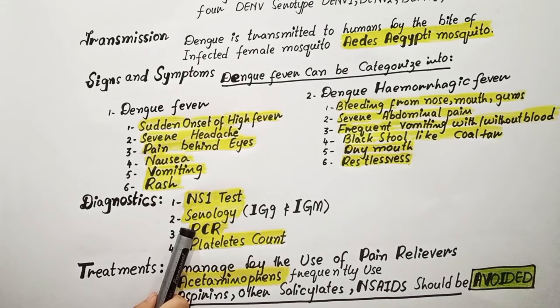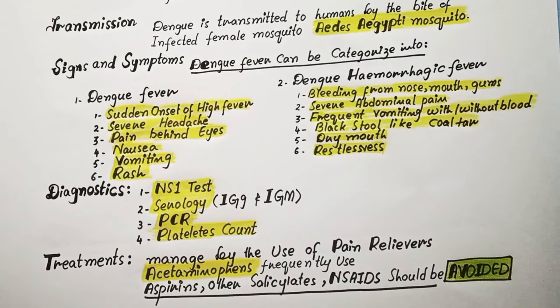Through PCR we can detect a minute quantity of antigens. Thrombocytopenia, which is a drop in platelet count, is common in dengue fever, so the platelet count test is also used in diagnosis.